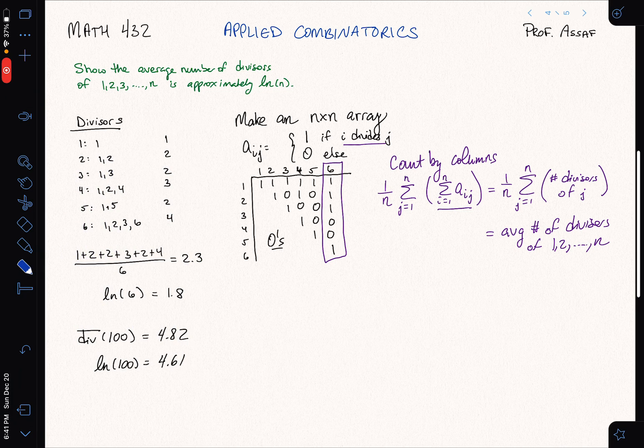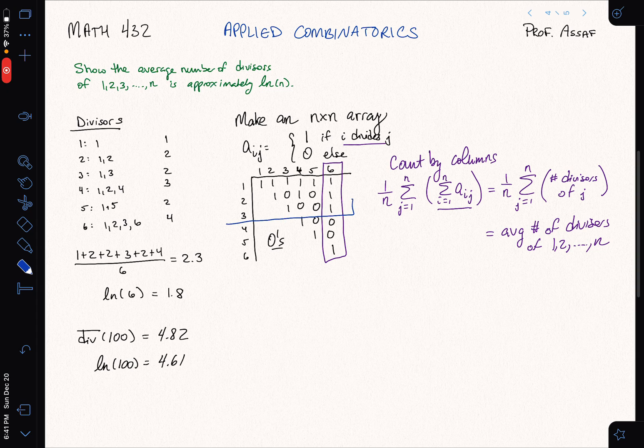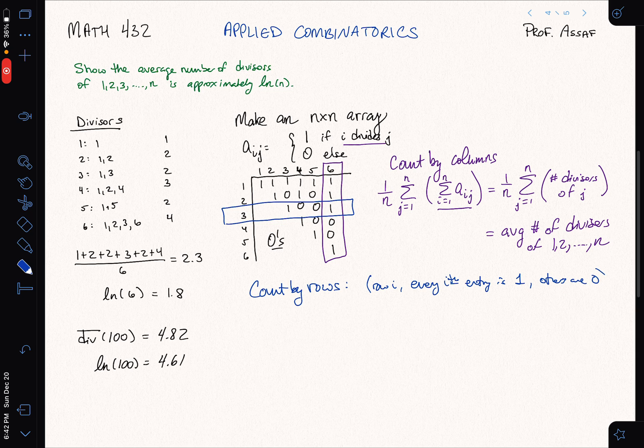Okay? So let's switch colors and switch how we count. Now what I want to do is I want to think about counting the rows and adding those up first. So let's do that. Count by rows. And now what do we notice here? Like look at the row of twos. Every second entry is a 1. The threes, every third entry is a 1. And in general, in row i, every ith entry is a 1 and the others are 0.